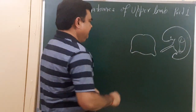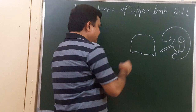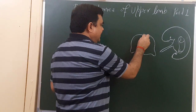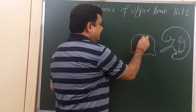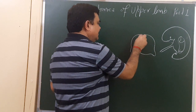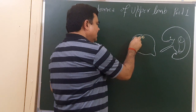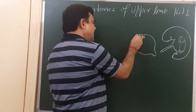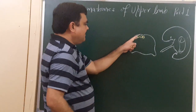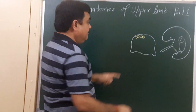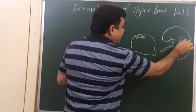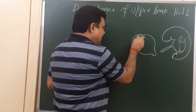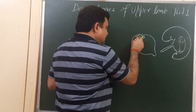...like this. Here is one spinal segment with one spinal nerve. This is the dorsal root, this is the ventral root, and this is the spinal nerve. It gives the dorsal ramus, which supplies this area — this area is supplied by the dorsal ramus. This is the ventral ramus.